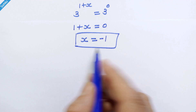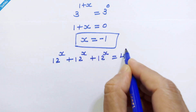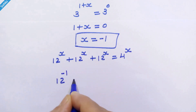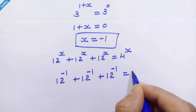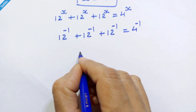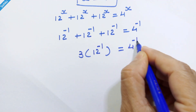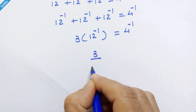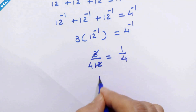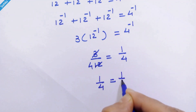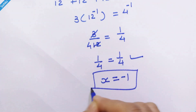Let's verify this in the equation. So 12 raised to minus 1 plus 12 raised to minus 1 plus 12 raised to minus 1 is equal to 4 raised to minus 1. We can write 3 into 12 raised to minus 1 is equal to 4 raised to minus 1. Now here we can write 3 upon 12 is equal to 1 upon 4. Since 3 fours are 12, we have 1 upon 4 is equal to 1 upon 4. So we have the right answer — x is equal to minus 1.